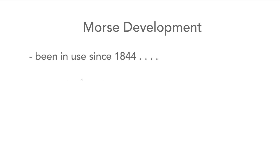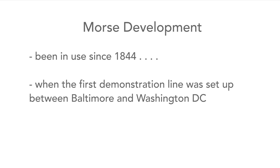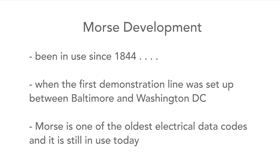The Morse system has been in use since 1844, when the first demonstration line was set up between Baltimore and Washington DC in the USA. This makes it one of the oldest electrical data codes, and it's still in use to this very day.